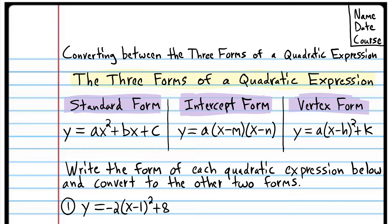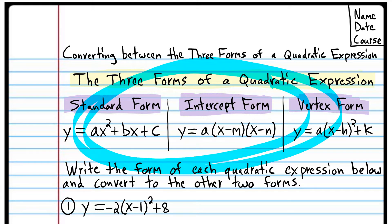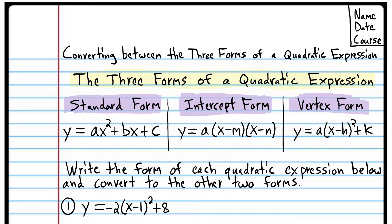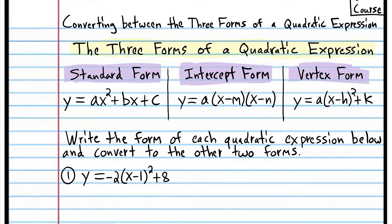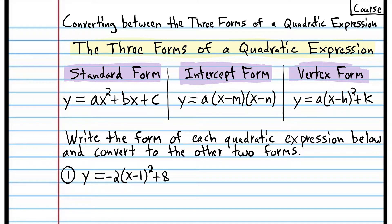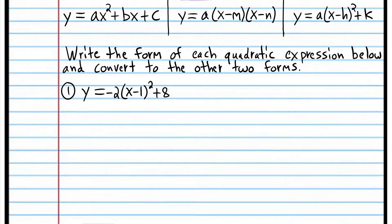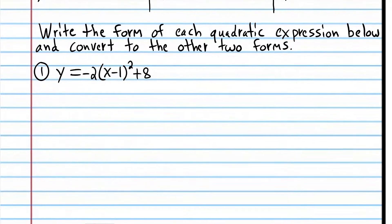Here are the three forms. You have this information already, or you should have it in your files, but you can take a screenshot if you need a refresher. We're going to start by converting from vertex form to standard form, and then standard to intercept form.